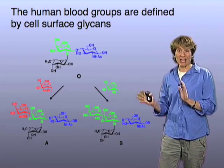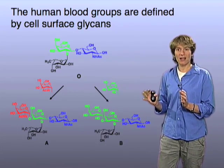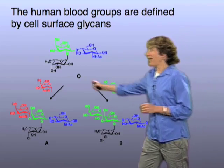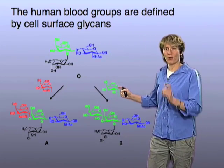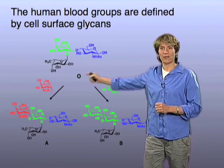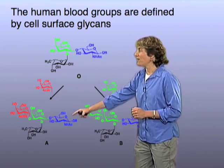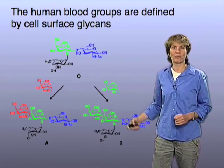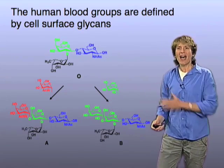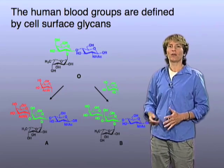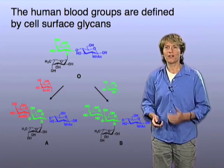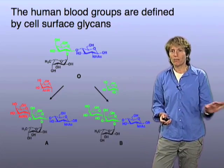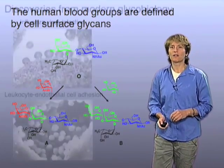Those of you who are blood type AB have both this enzyme and this enzyme. You got one enzyme from your mother, the other from your father, and you can make a 50-50 mixture of these two structures — that's what you've got on your blood cells. This is considered a real classic discovery in the field of glycobiology, dating back to the mid-to-late 1900s.